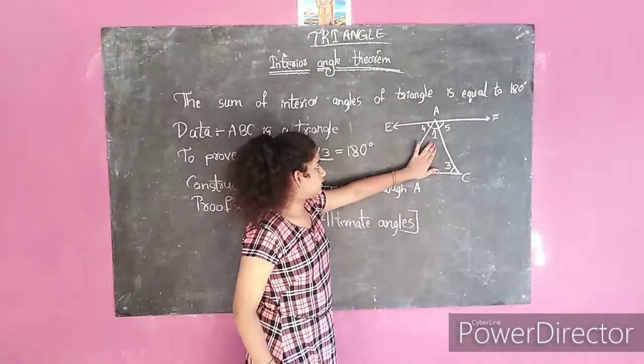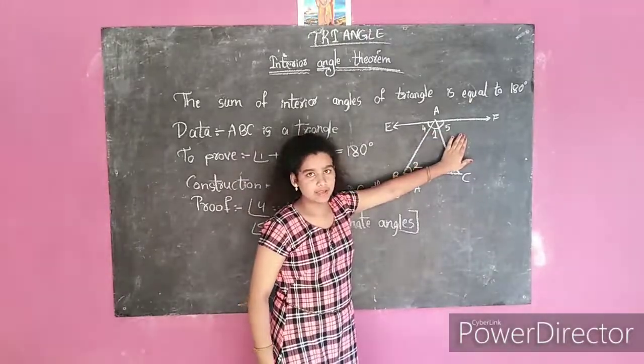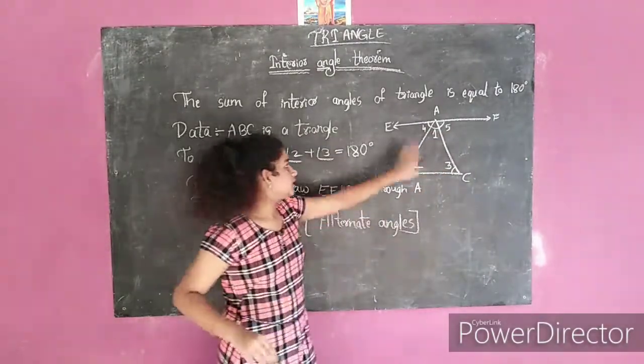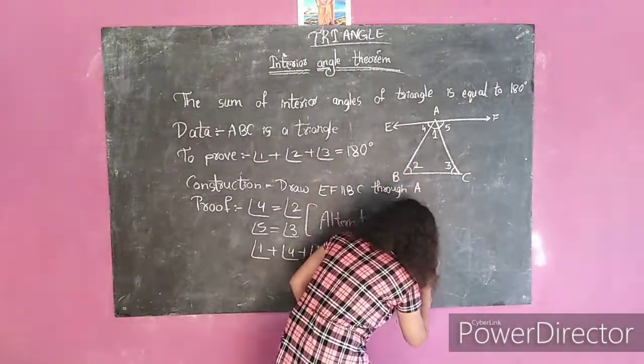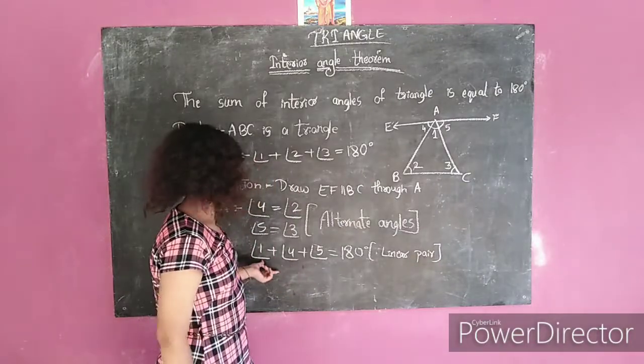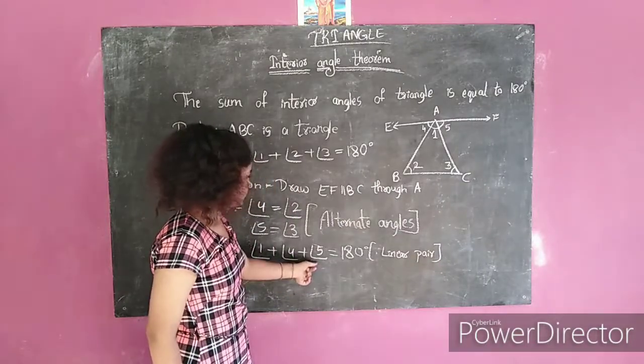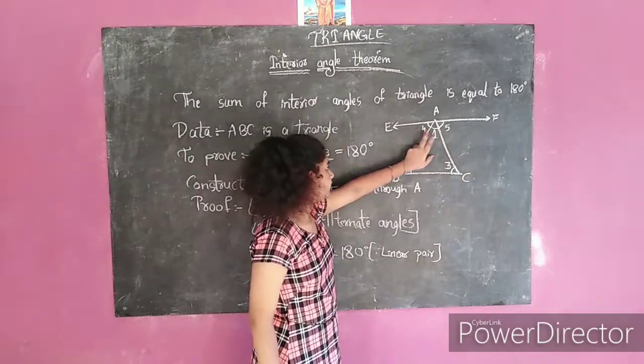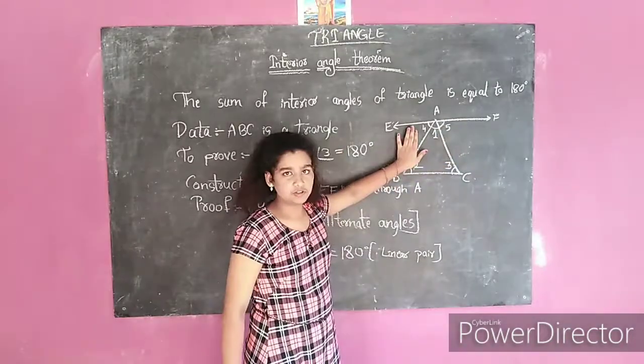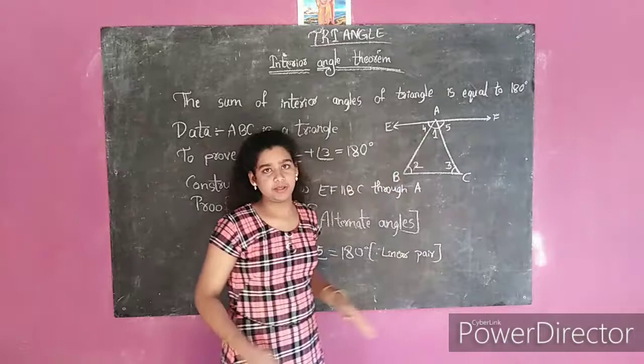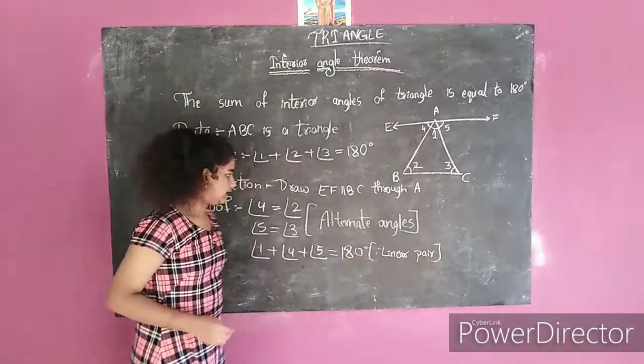Now we can write angle 1 plus angle 4 plus angle 5 is equal to 180 degrees, because it is a straight line which we call a linear pair of angles.